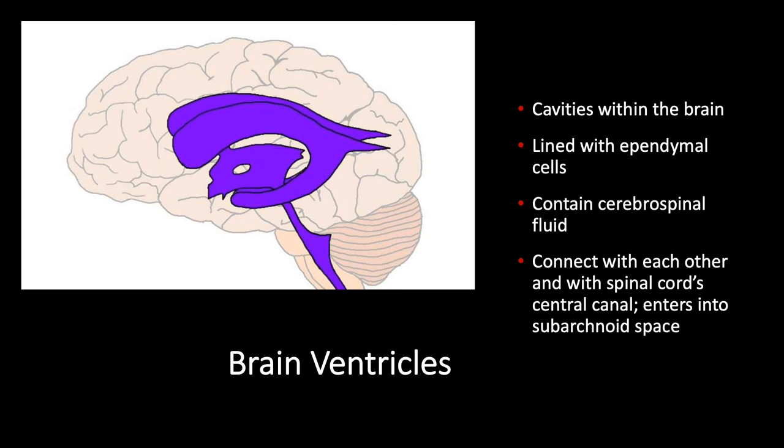The ventricles then are cavities within the brain that are not hollow but contain CSF. Certain areas are lined with ependymal cells that create that CSF. All those ventricles are connected with one another so the CSF can flow through them. It can enter the spinal cord via the central canal, and it also enters at the bottom of the fourth ventricle — there's a space where it can enter into the subarachnoid space, filling those meningeal layers with CSF.